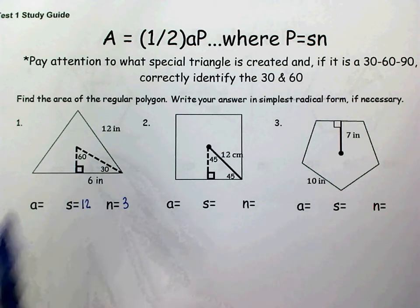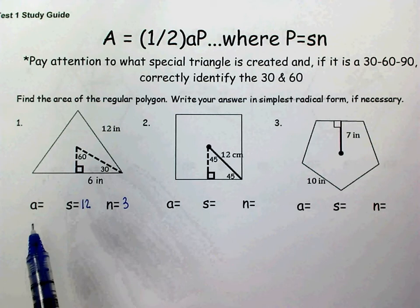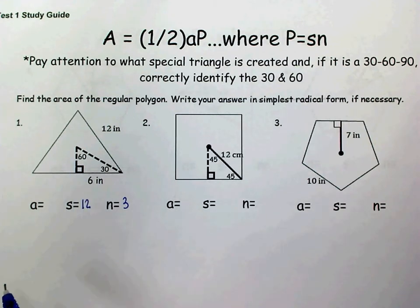This leaves 60 degrees up here at the center. So it's really important when you're identifying your 30-60-90 that you correctly identify where the 30 is and where the 60 is.